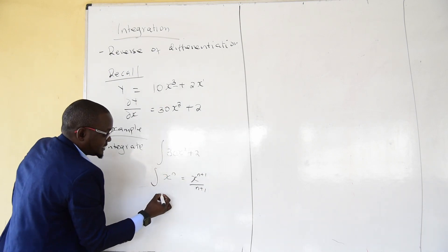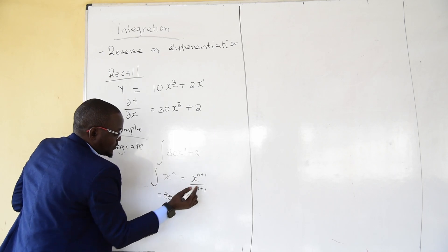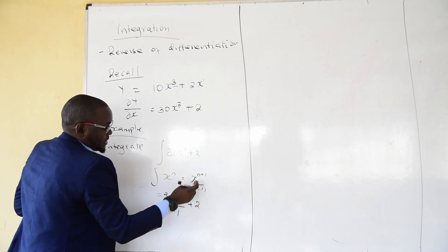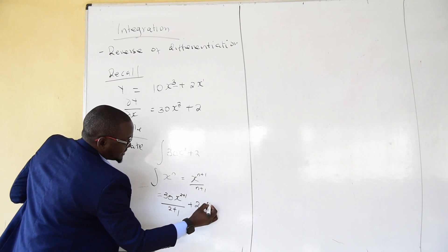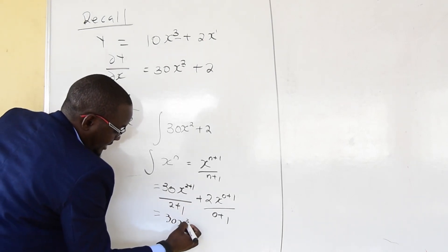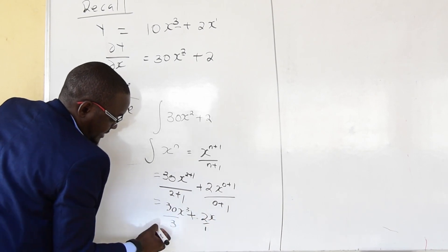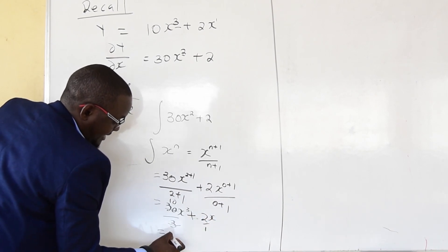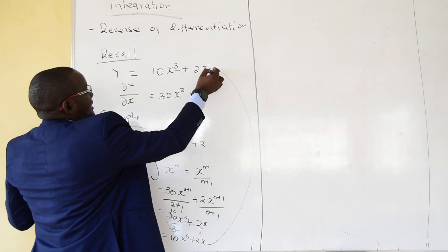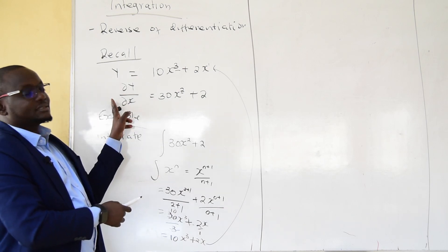So here we shall have this. We take 30x — we know we should add 1, so we have 2 plus 1 divided by 2 plus 1, plus 2x where x is raised to power 0 plus 1 divided by 0 plus 1. That means we shall have 30x power 3 divided by 3, plus 2x over 1. When you simplify this, you get 10x power 3 plus 2x. We have reversed and gone back to our initial y, so integration is the reverse of differentiation.